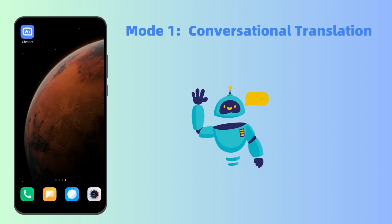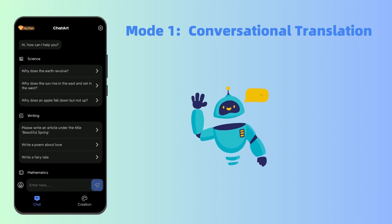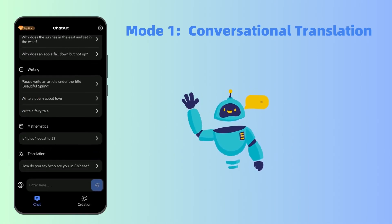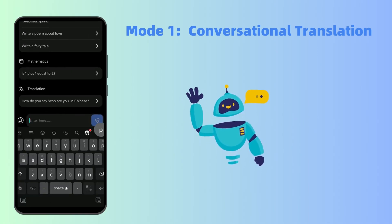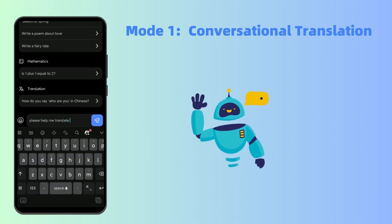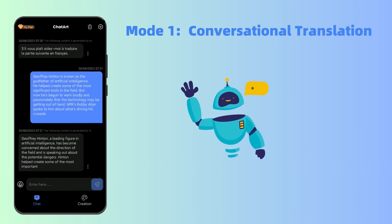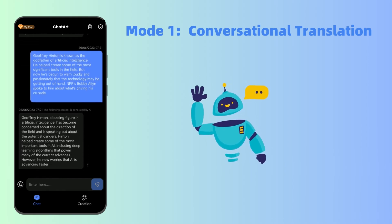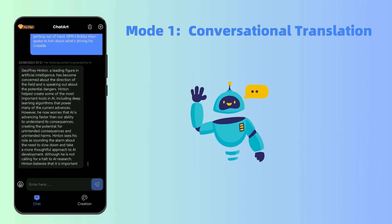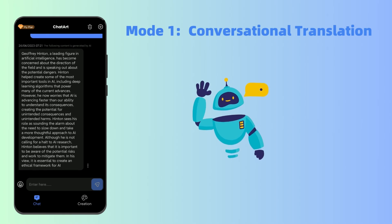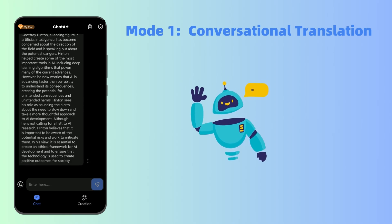Let's see the first mode. Here, you can type the original texts, then you can send the request. After a while, you will get the target text. If you are not satisfied with the results, you can also ask it to rewrite or polish it.